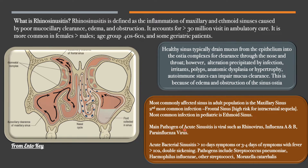The main pathogen of acute sinusitis is viral, including rhinovirus, influenza A and B, and parainfluenza virus. Acute bacterial sinusitis is diagnosed when symptoms last more than 10 days, or 3 to 4 days of symptoms with fever greater than 102. There's a double sickening in 5 to 10 days of presentation. Bacterial pathogens include Streptococcus pneumoniae, Haemophilus influenzae, other streptococci, and Moraxella catarrhalis.